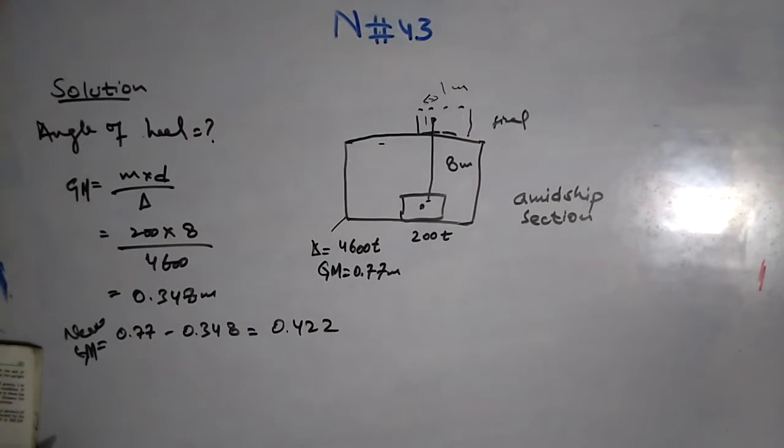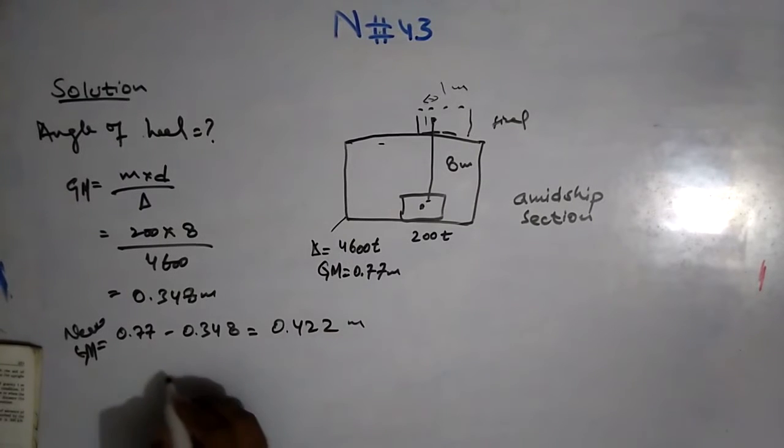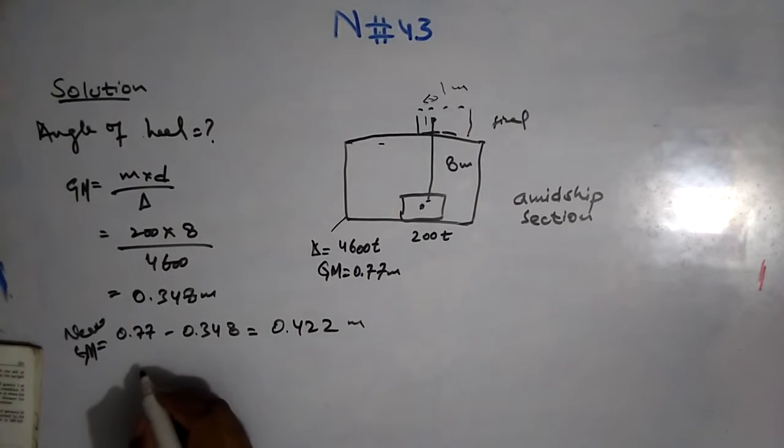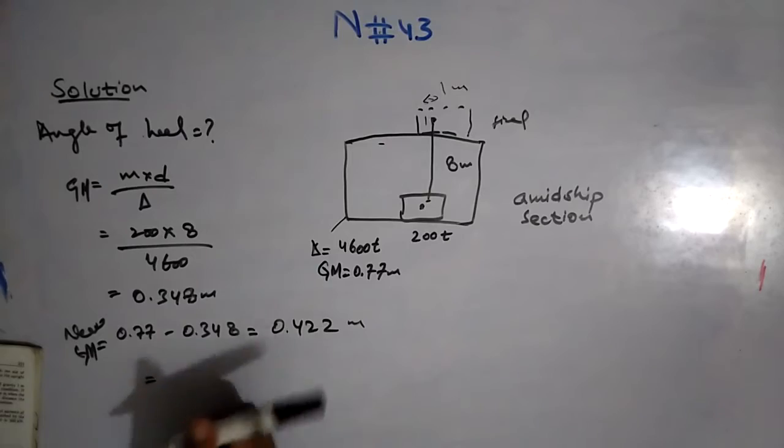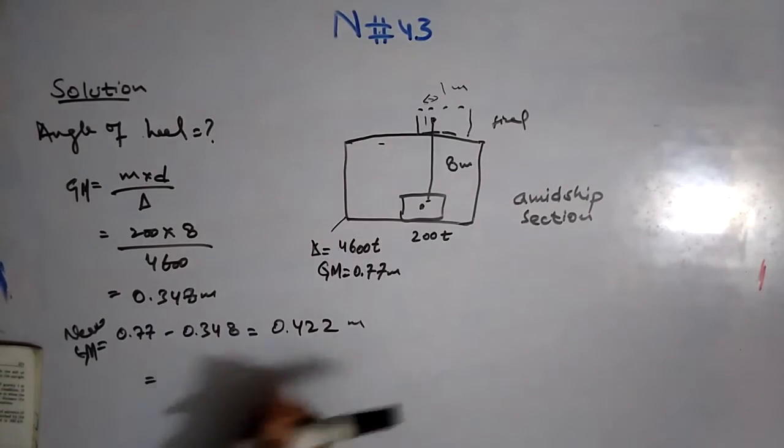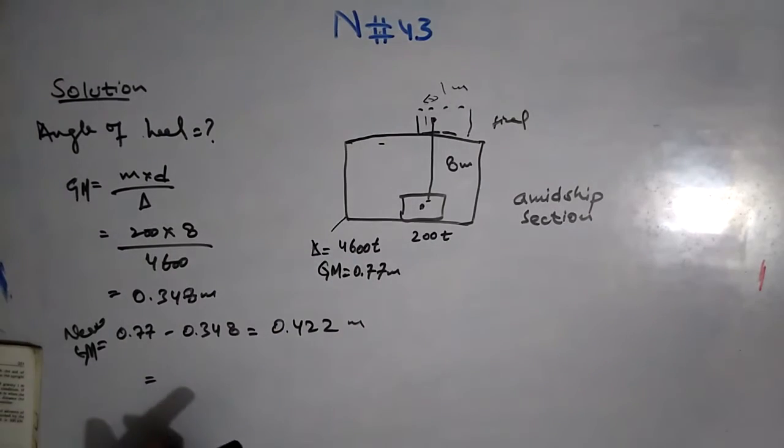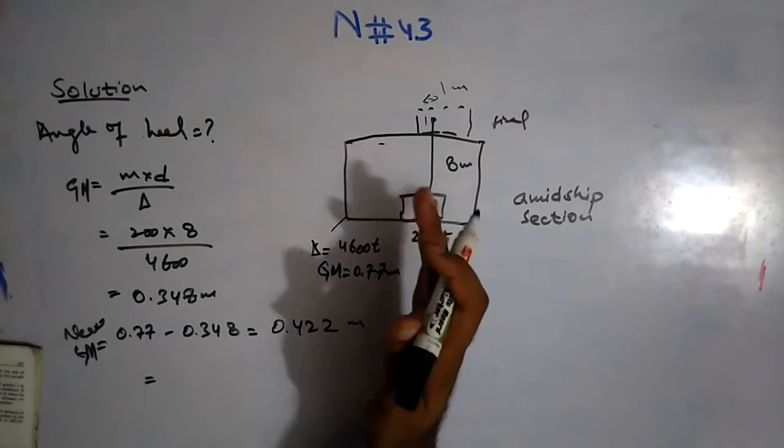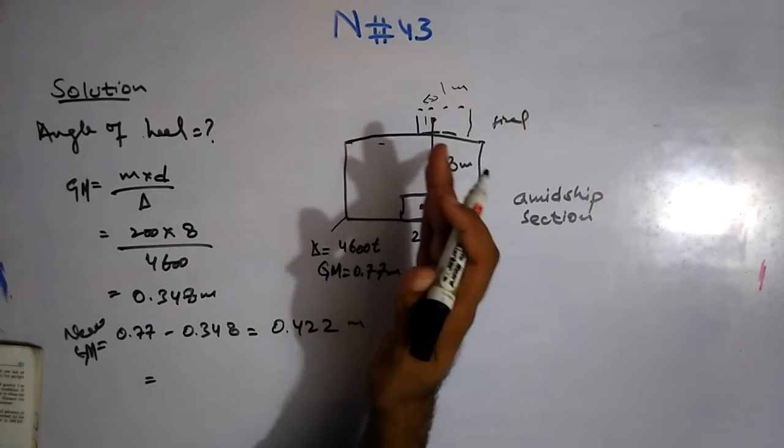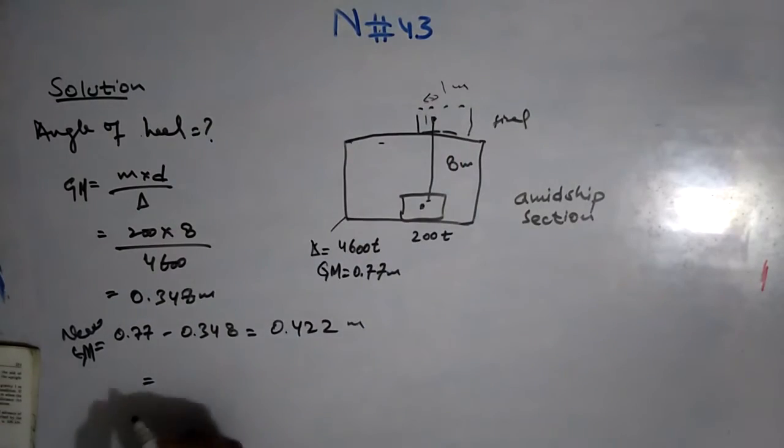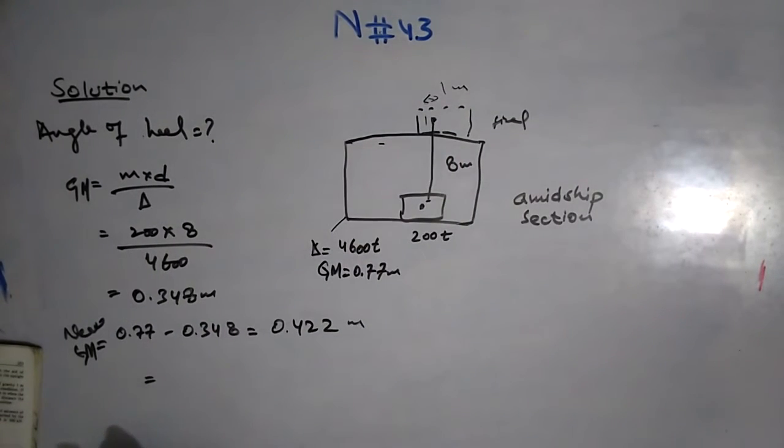Now this is the new GM, and now I will calculate the transverse movement. This was the vertical movement. Now I'm moving the transverse movement from moving the weight to port or starboard side.